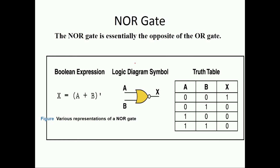In exactly the same manner, we have the NOR gate. NOR gate is the combination of OR gate with NOT gate — the bubble represents the NOT gate. The Boolean expression is (A + B)-bar. The output truth table is the inverse of OR gate: where OR outputs 0, 1, 1, 1 — NOR outputs 1, 0, 0, 0.